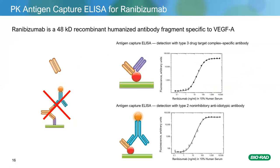Many antibody drugs today are not classical bivalent fully human IgGs — they're fragments such as ranibizumab, a 48 kilodalton FAB fragment specific to vascular endothelial growth factor A, for which we also have anti-idiotypes in our catalogue. You can use type 2 or type 3 anti-idiotypes to measure free drug in these scenarios: coat a solid surface with the drug target, let the drug bind, detect with a type 2 or type 3 anti-idiotype, and construct a calibration curve for measuring these fragment drugs in clinical samples.